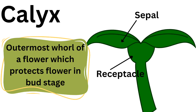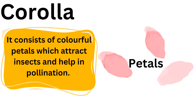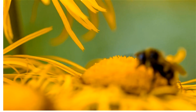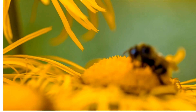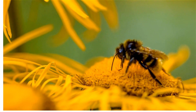Calyx is the outermost whorl of the flower, which protects the flower in its bud stage. Corolla consists of colorful petals which attract insects and help in pollination.